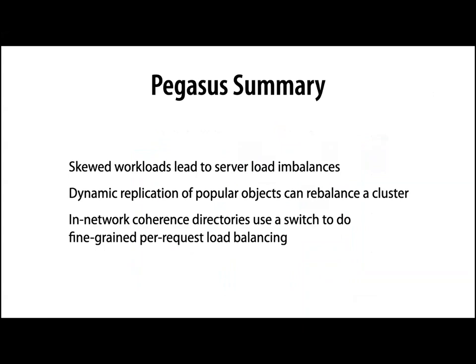With Pegasus, we can reduce the number of servers needed to meet a latency SLO by a factor of about eight, and get throughput for a very highly skewed workload that looks as though we're running a uniform workload. Skewed workloads cause server load imbalances, and the in-network coherence directory combined with custom application-level logic in the programmable switch — making a routing decision on every packet — enables fine-grained per-request load balancing.